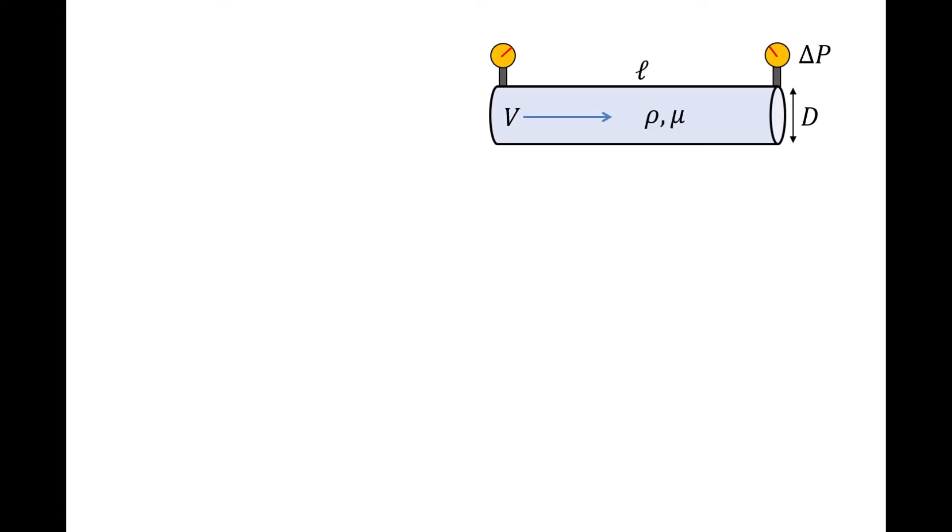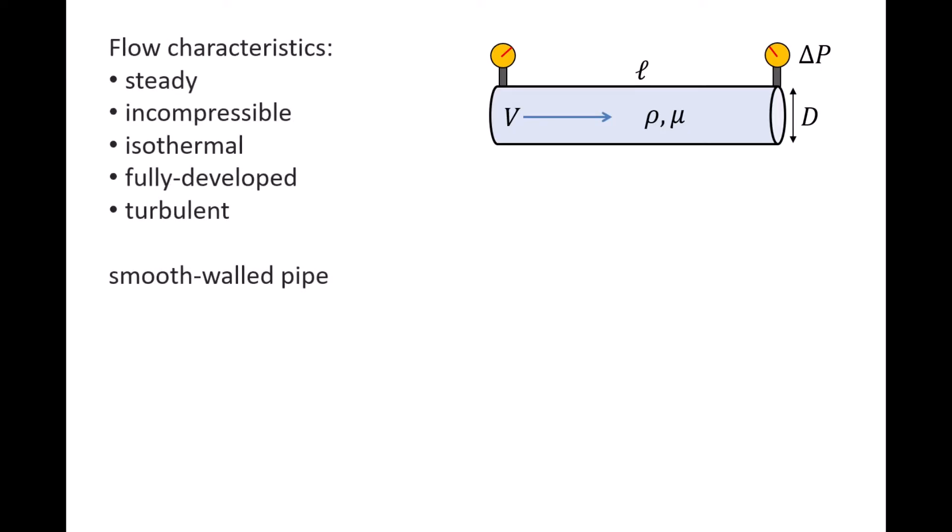In previous videos, we discussed how the pressure drop per length of pipe, delta P/L, is a function of several variables. If the flow through the pipe is steady, incompressible, isothermal, fully developed, and turbulent, and the pipe wall is smooth,